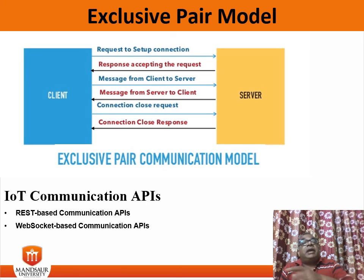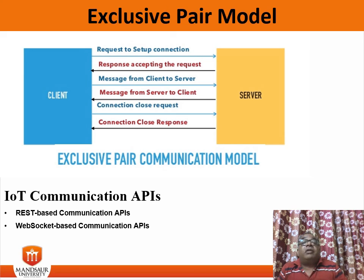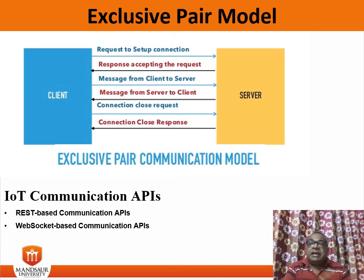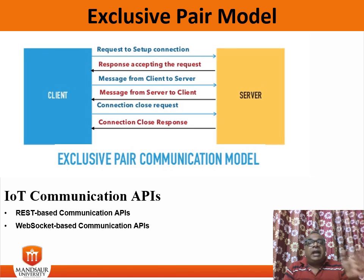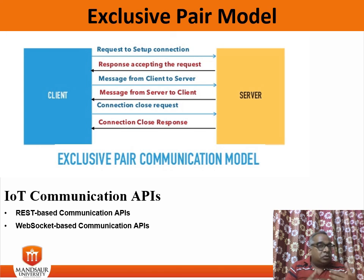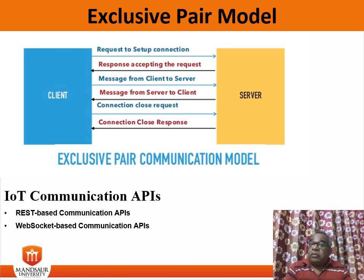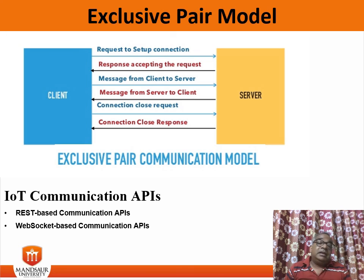The connection setup request is called the WebSocket handshake and is sent over HTTP. The server interprets it as an upgrade request. If the server supports the WebSocket protocol, the server responds with a WebSocket handshake response. After connection setup, client and server can send data messages to each other in full duplex mode. WebSocket API reduces network traffic and latency as there is no overhead for connection setup and termination for each message. WebSocket is suitable for IoT applications that have low latency and high throughput requirements.